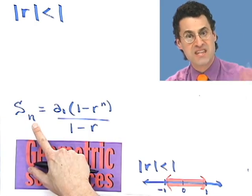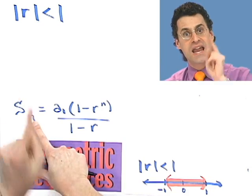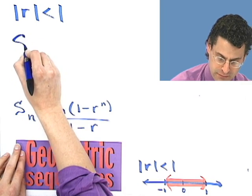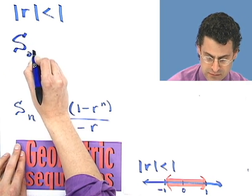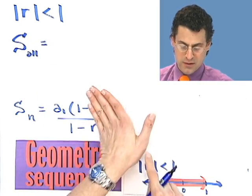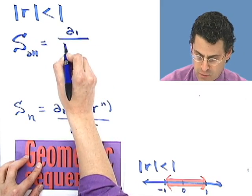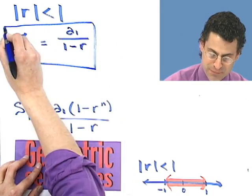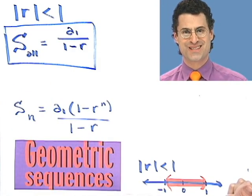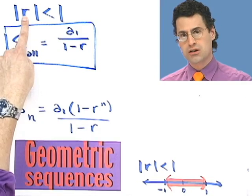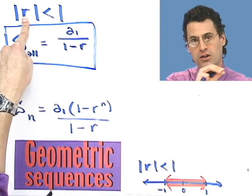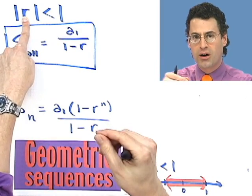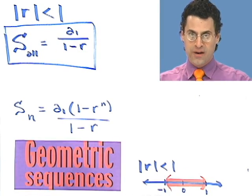What does that mean? It means that if you want to add up all the terms — infinitely many of them, not just the first hundred or thousand, but all of them — you can actually figure it out. As n goes to infinity, r to the n heads to zero, and you're left with the formula a1 divided by 1 minus r. This is so remarkable, because now we can actually add up infinitely many things. Since the ratio is small, the terms get smaller and smaller, and when you add it all up, you get a finite sum.